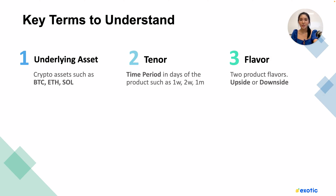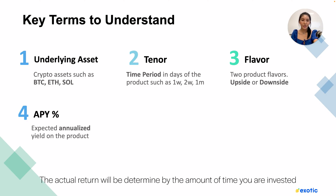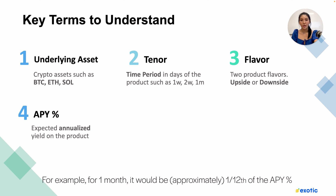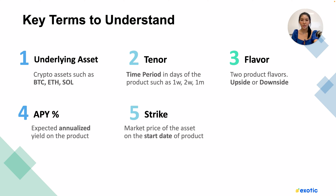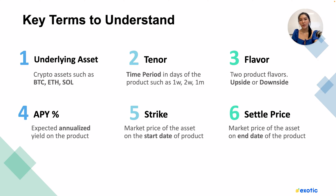Flavor refers to the two product flavors: upside or downside. APY is the expected annualized yield on the product — the actual return will be determined by the amount of time you are invested. For example, for a month it will be 1/12th of the APY percentage. Strike is the market price of the asset on the start date of the product. Settle price is the market price of the asset on the end date of the product.